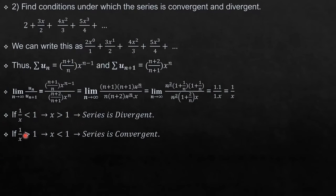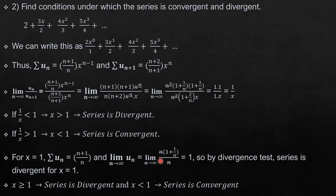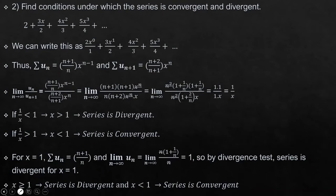Similarly, for convergence, 1/x greater than 1 implies x less than 1, and the series is convergent. We cannot leave the answer here — we must find what happens when x equals 1. Plugging in 1, u_n becomes (n+1)/n, and by the divergence test the limit is 1, which is non-zero, so the series is divergent for x equal to 1. Final answer: for x greater than or equal to 1 the series is divergent; for x less than 1 the series is convergent.